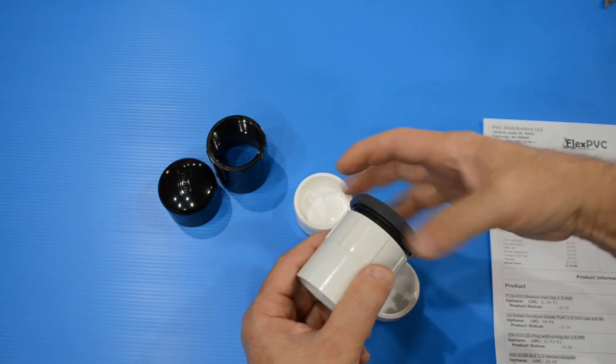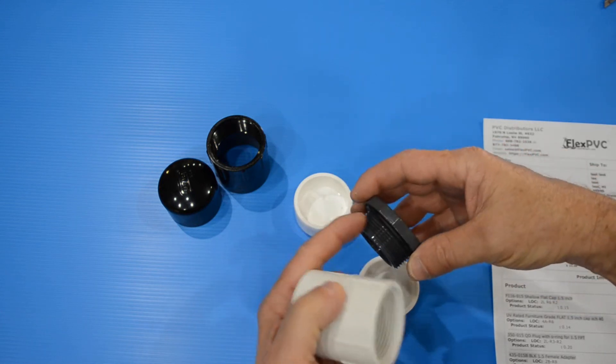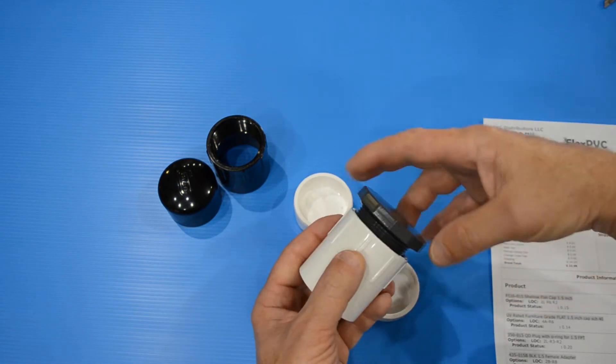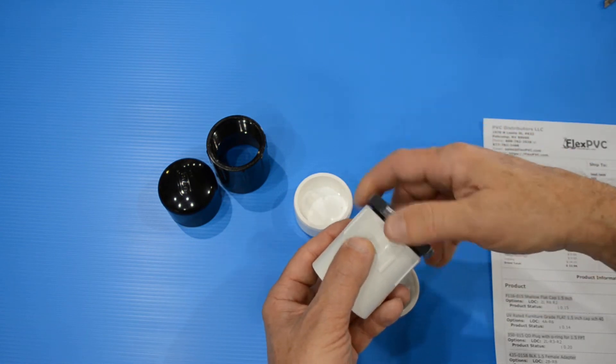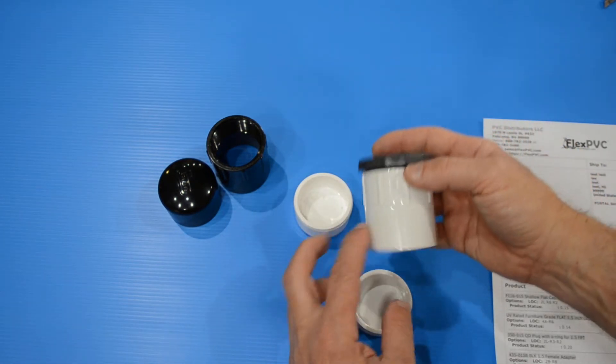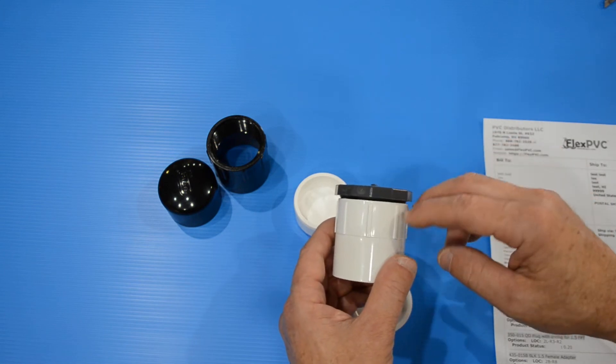This is going to seal on the O-ring right here. You're going to put a little bit of thread lubricant, anti-seize or some pipe compound lubricant here, and that's what will allow you to thread this in many times and take it apart and still get a watertight seal. So this is your standard female adapter, a 435-015.